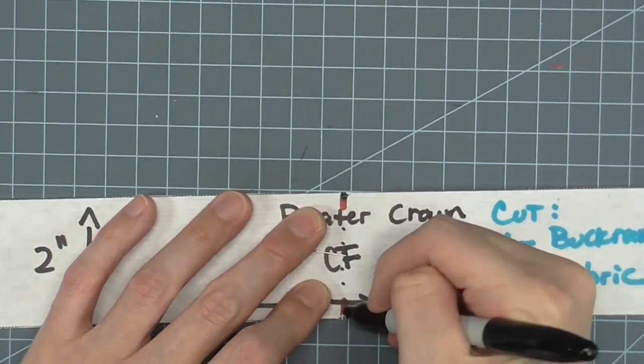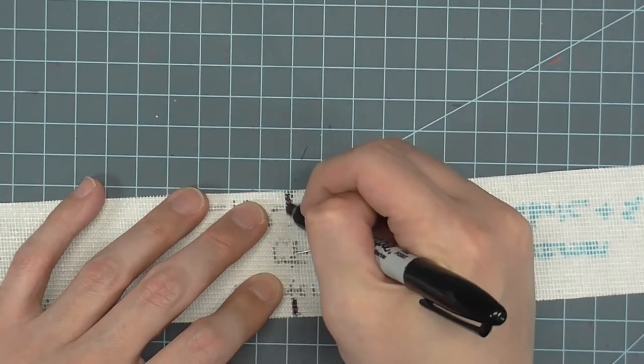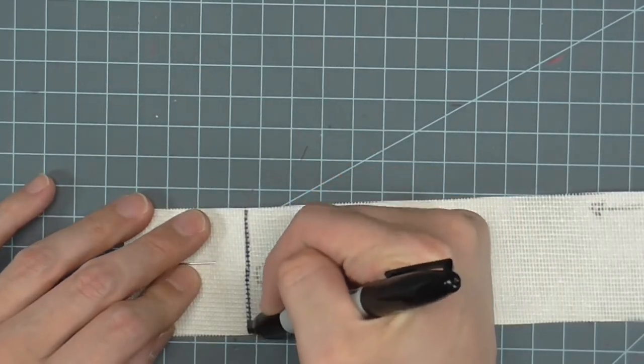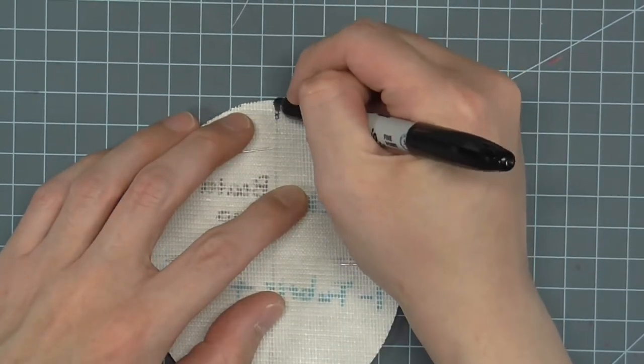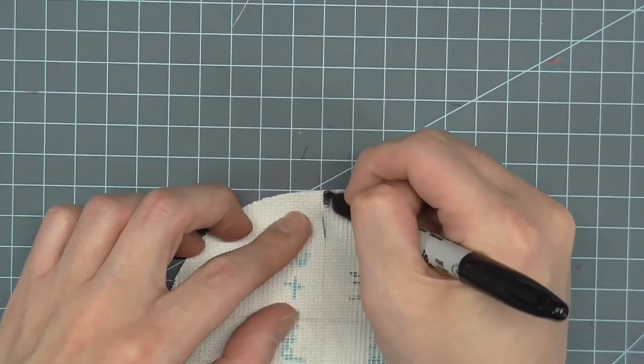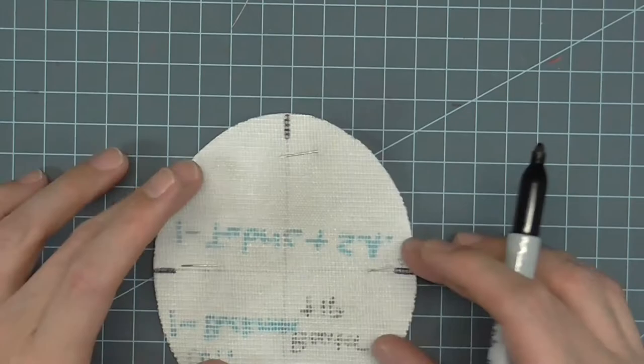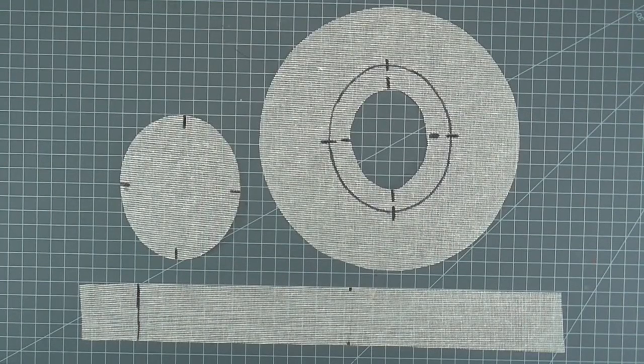Mark center front and center back on the crown. Mark all the notches on the tip. Here are all of my pieces marked.